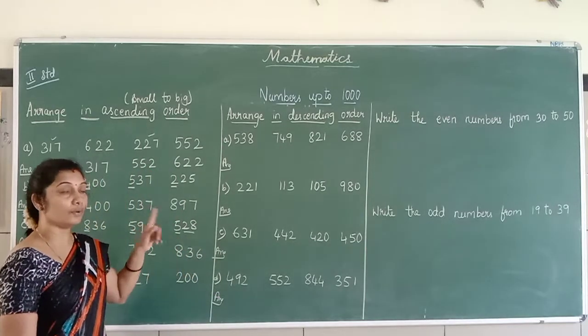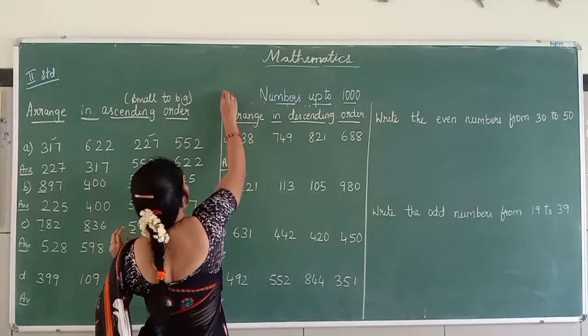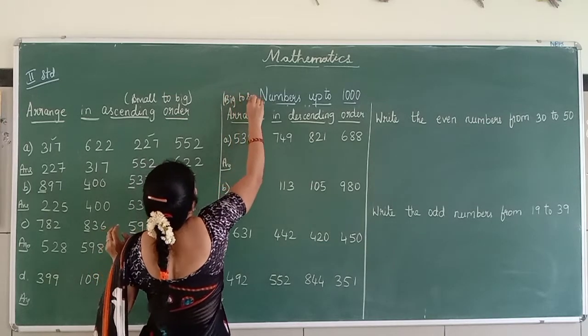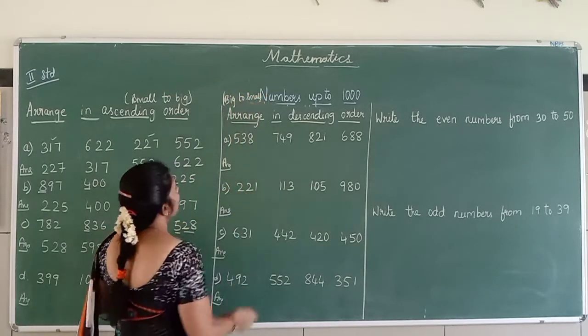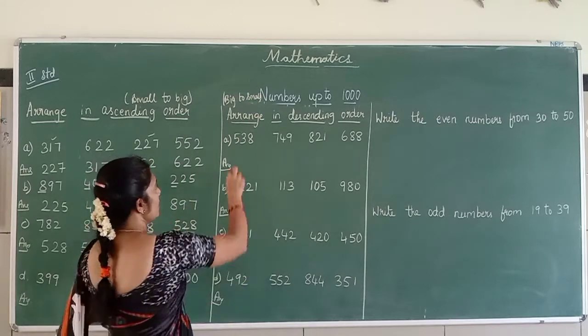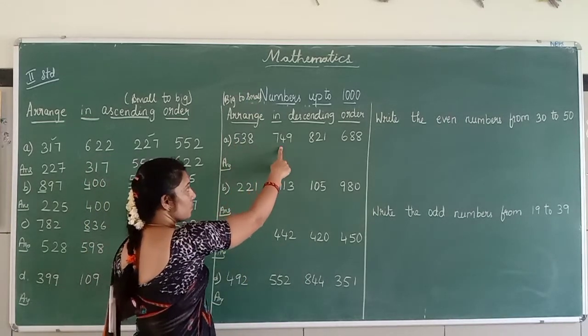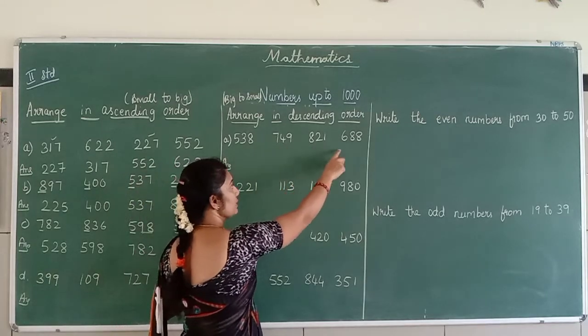See, ascending, it is small to big. Descending will be big to small. Okay, so as I said to you, let me read the number first. 538, 749, 831, 688.